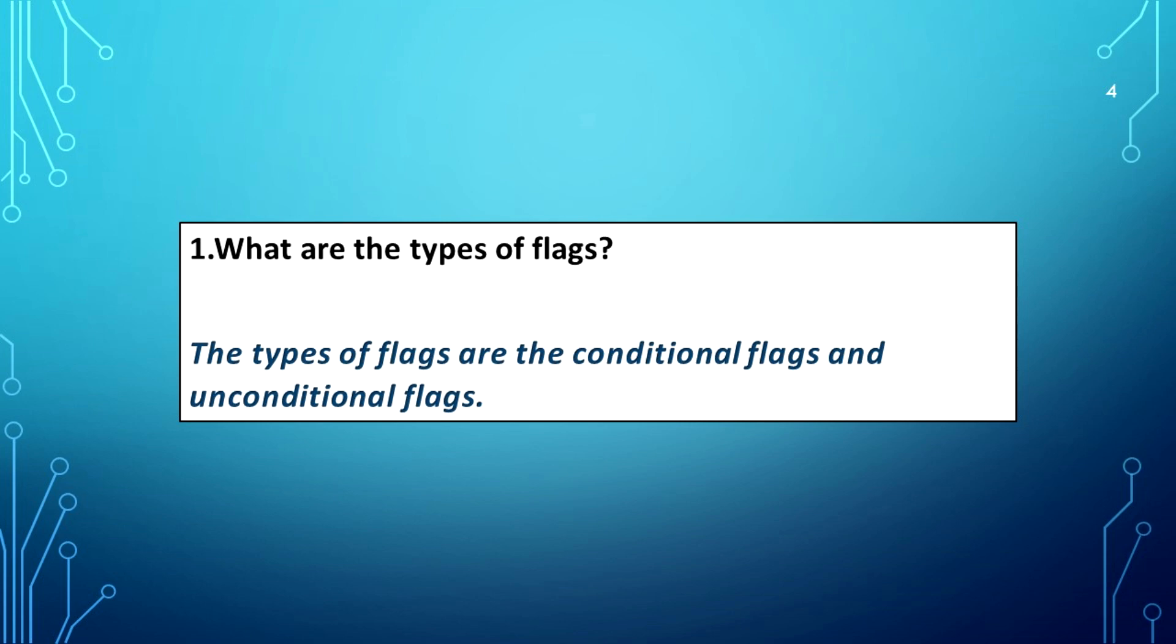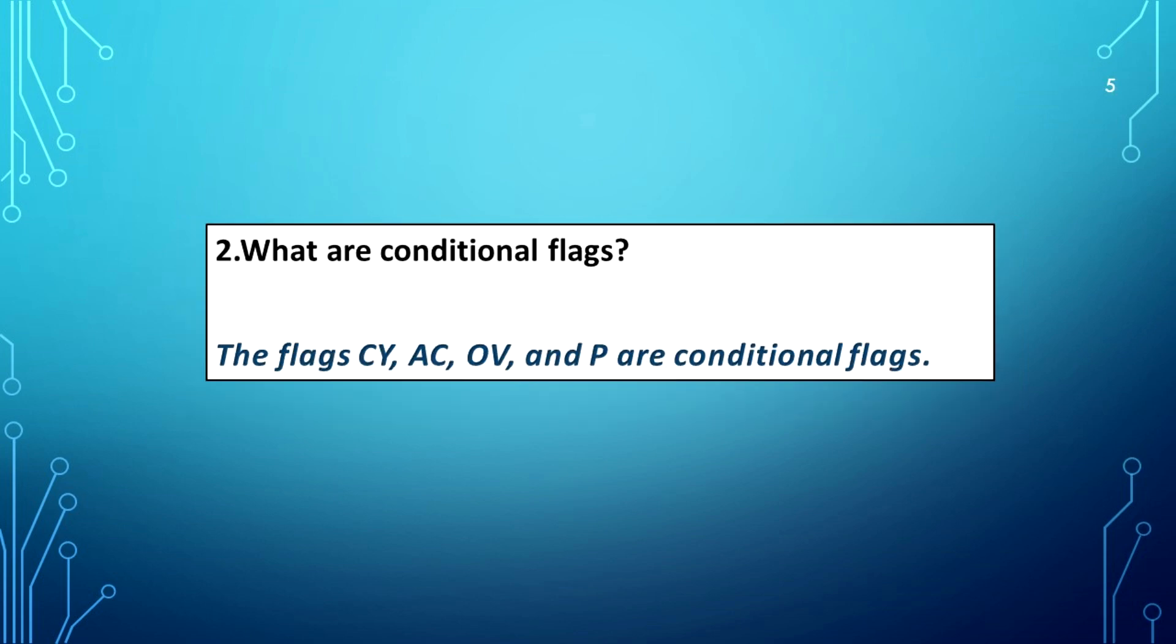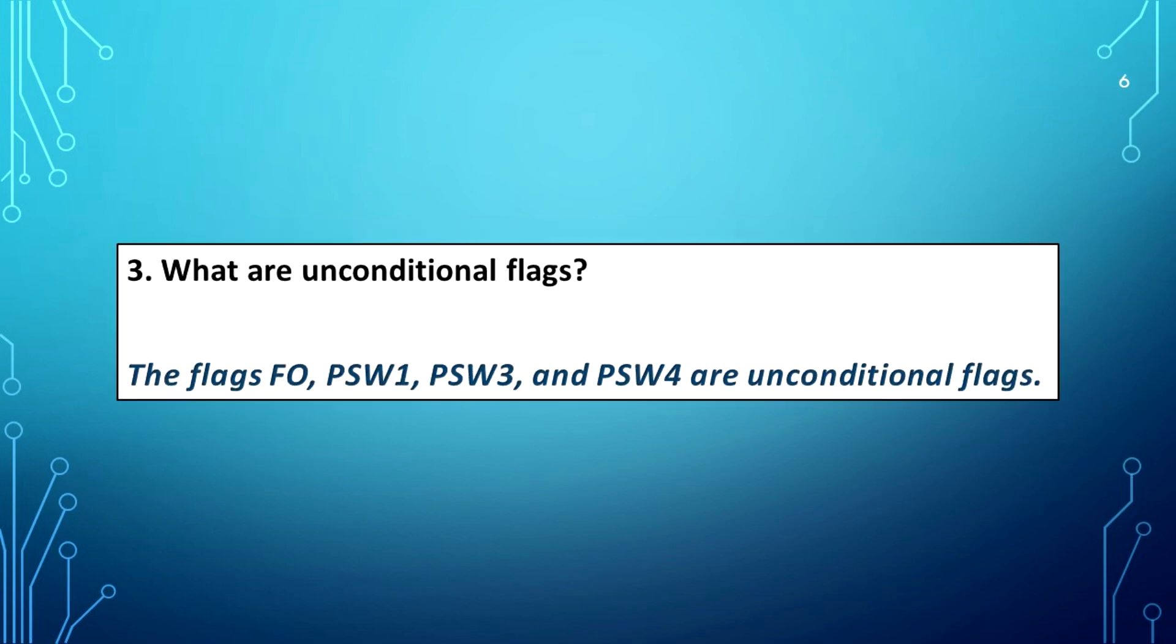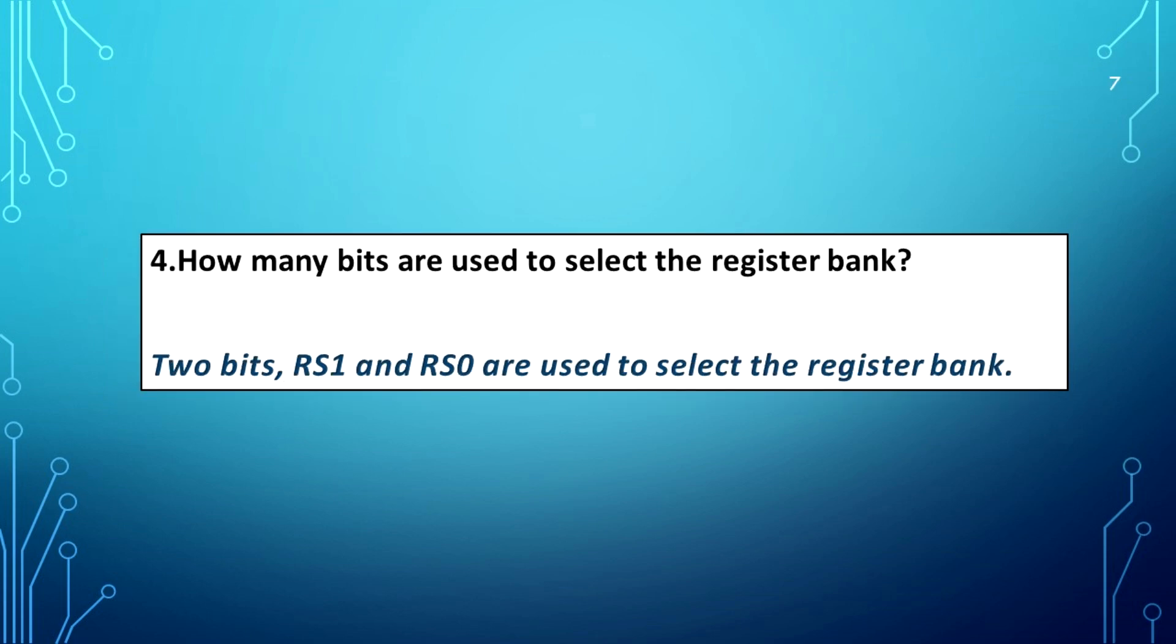What are the types of flags? The types of flags are the conditional flags and unconditional flags. What are conditional flags? The flags CY, AC, OV, and P are conditional flags. What are unconditional flags? The flags F0, PSW1, PSW3, and PSW4 are unconditional flags. How many bits are used to select the registered bank? Two bits, RS1 and RS0, are used to select the registered bank.